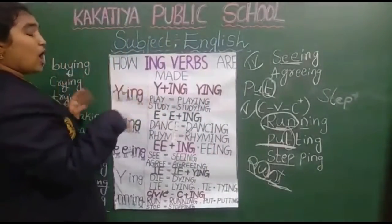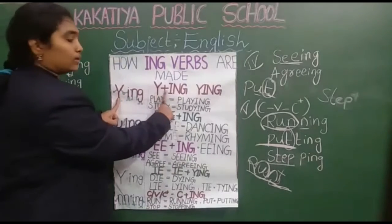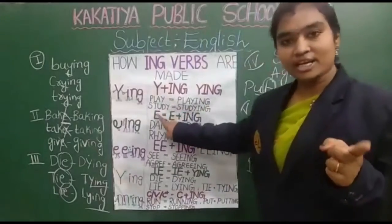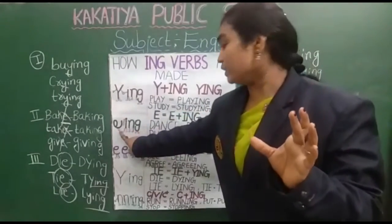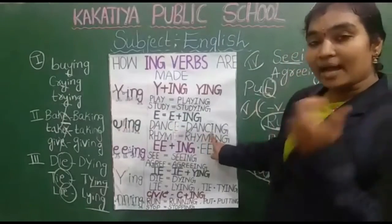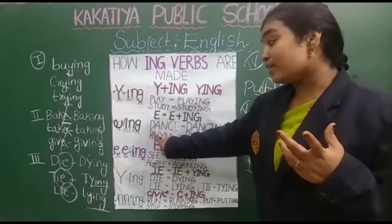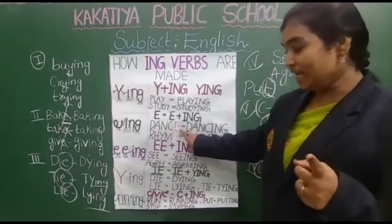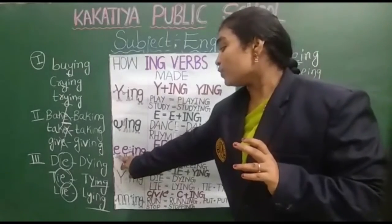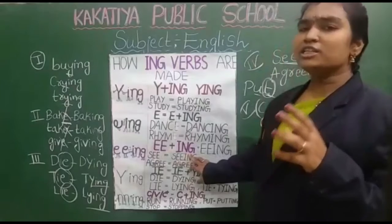Let us revise one more time. How are we forming ING words? Rule 1: when the word ends with Y, it forms Y-I-N-G — for example, play becomes playing, study becomes studying. Rule 2: when the word ends with E, we strike off E and add I-N-G — for example, dance becomes dancing. Rule 3: when the word ends with double E, I-N-G just becomes friends — for example, see becomes seeing, agree becomes agreeing.